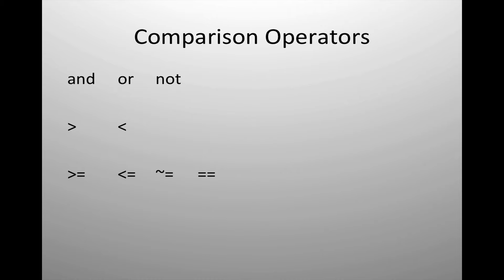We also have the greater than and less than symbols, and you can also use the greater than or equal, less than or equal, not equal, or equal comparison operator. We should make a note of two specific operators: to do a not equals, it uses the tilde and the equal symbol, and to do an equal comparison requires two equal signs. Otherwise, you're just doing an assignment, which is a single equal sign.